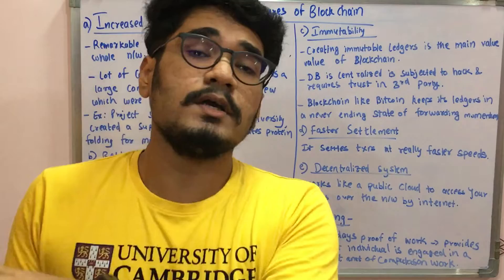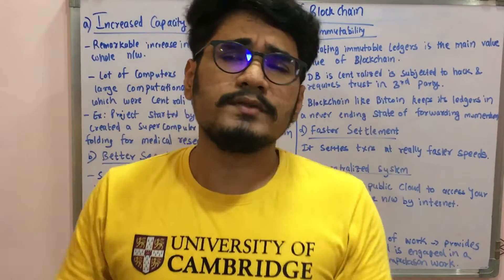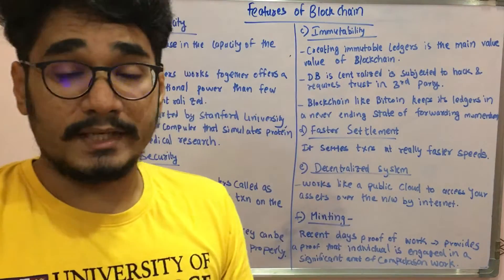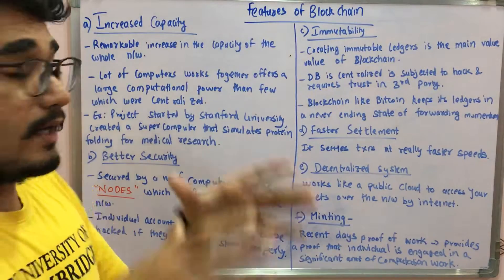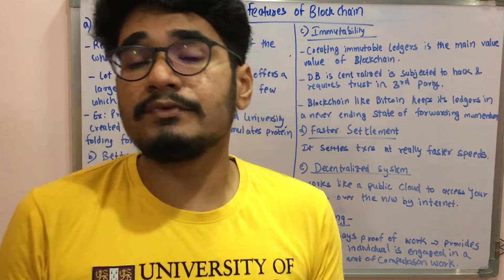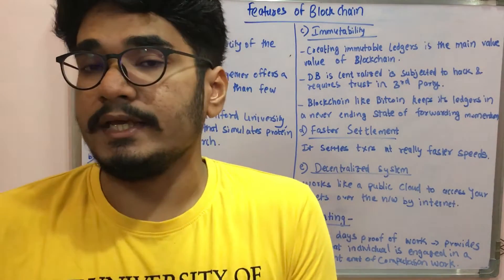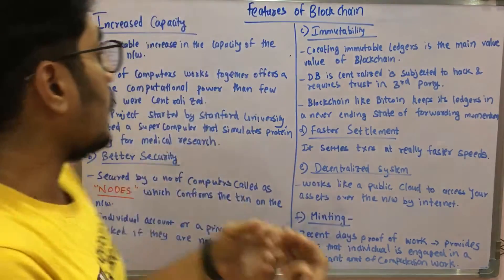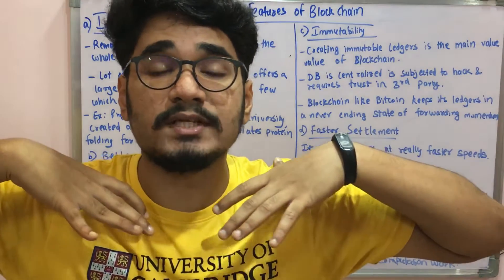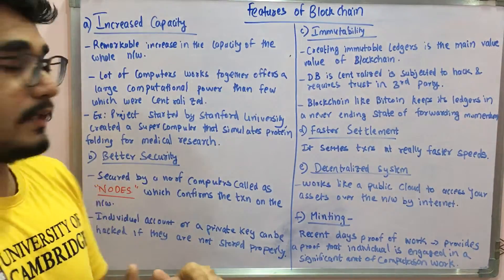Earlier in the traditional banking system, you had one particular database or one server doing all the computational activity, which was a kind of bottleneck on that particular data center. That issue is not there in blockchain. An example supporting this feature is a project started by Stanford University in which they made a supercomputer that does protein folding activity as part of their medical research — using an entire range of computers as nodes spread across a wide area, not just one computer.